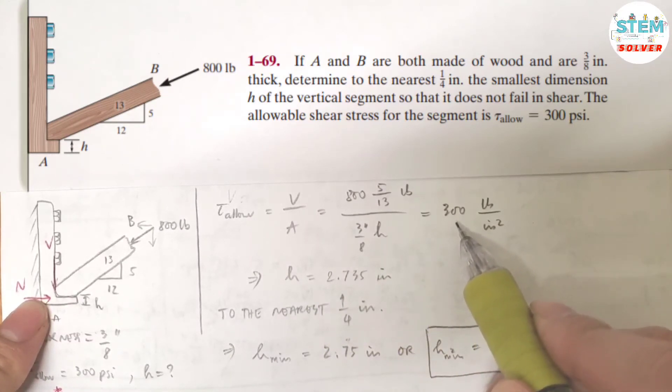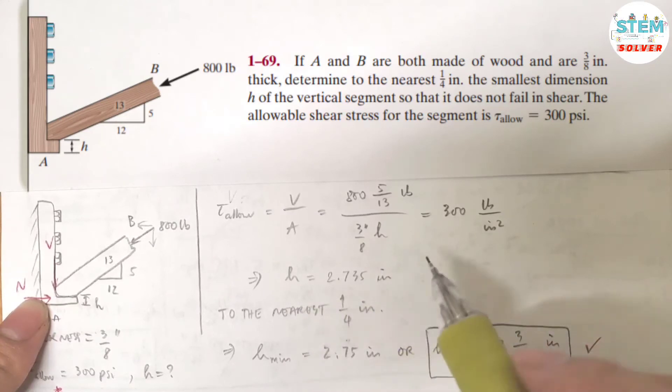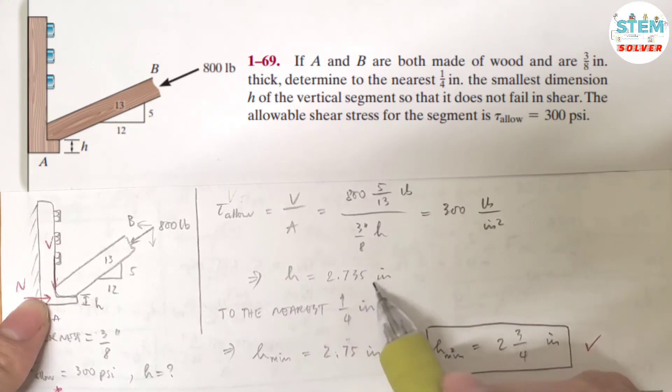OK, so insert that equal to allowable shear stress, which is 300 pounds per inch squared. So for H, you get 2.735 inch.